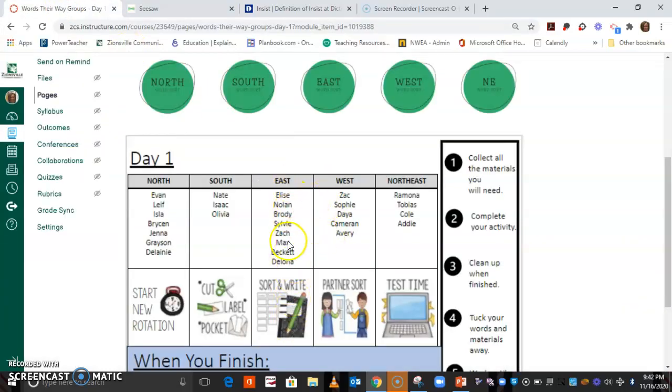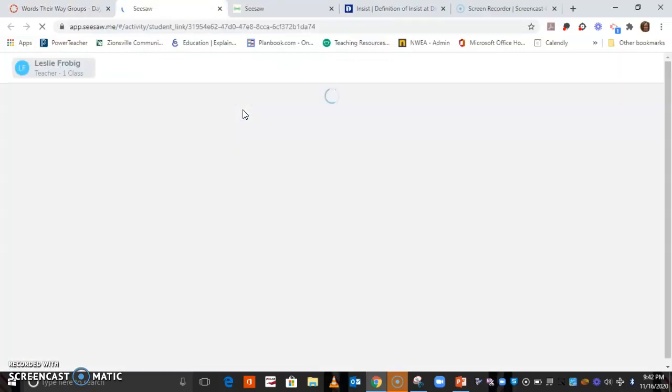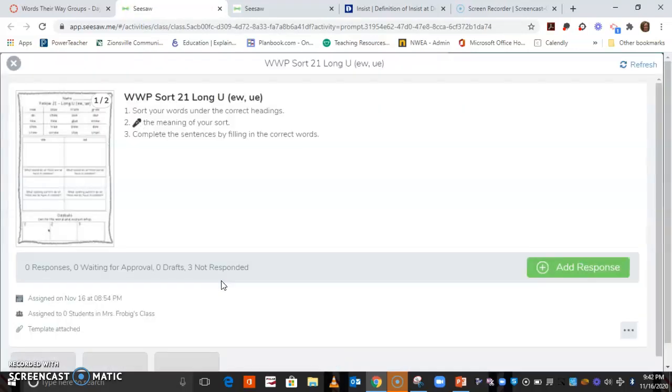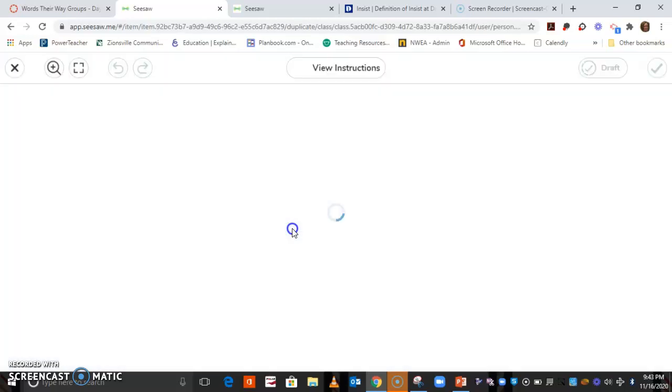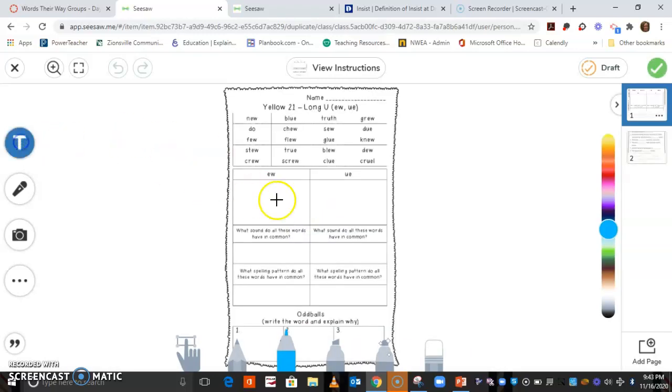Okay, south group, since I was not there yesterday to give you your actual cards, you're going to click on the south circle. You also have a Seesaw activity - you're going to need that barcode to get in. And these are just regular old worksheets that we've put into Seesaw. You're going to click add a response, pick which person you are - make sure you're being honest. And then I'm going to pick Isaac for right now. When you get in here, you can add the text.